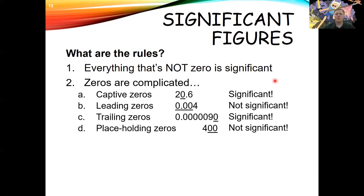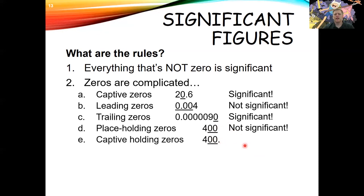There's some ambiguity with significant figures. The zero in '9.0' is significant because there's a decimal place. Trailing zeros are significant when there's a decimal point in the number. Placeholder zeros with no decimal point are not significant. If you want to indicate those zeros are significant — that you actually measured them — you add a decimal point, and then they become significant.